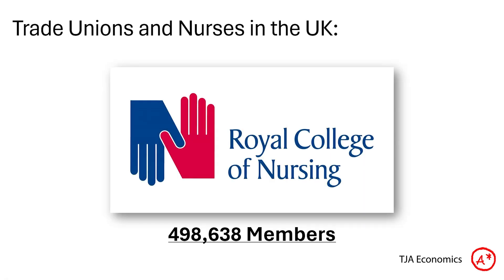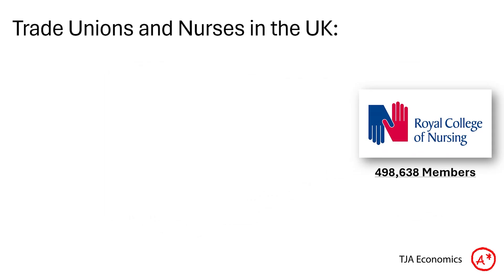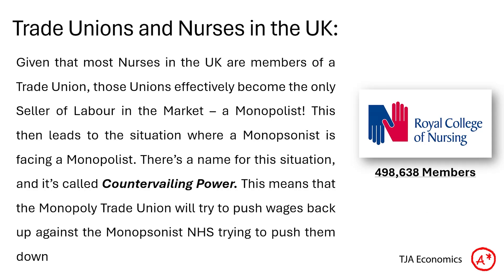However, trade unions do play a role in this. The Royal College of Nursing is the biggest trade union of nurses in the United Kingdom, with just shy of 500,000 members. Because most nurses are members of the Royal College of Nursing — and there are other unions too — this actually becomes a monopolist situation, meaning the trade unions are the only seller of nursing labour.